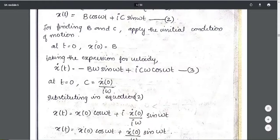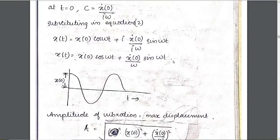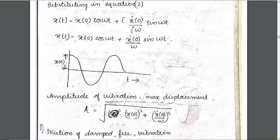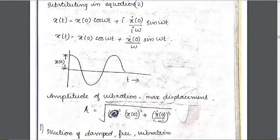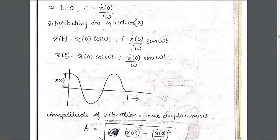We substitute the values of B and C into x(t) = B·cos(ωt) + C·sin(ωt), giving x(t) = x(0)·cos(ωt) + (x-dot(0)/ω)·sin(ωt). The amplitude of vibration is the square root of the sum of the squares of the coefficients of cos(ωt) and sin(ωt). This is the complete first solution for free undamped SDOF motion.